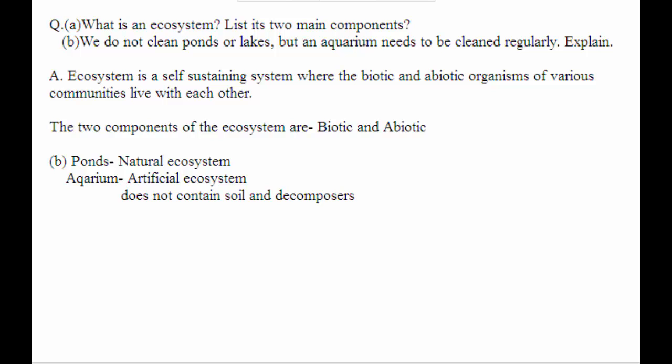So what is an ecosystem? Basically, an ecosystem is a self-sustaining system where the biotic and abiotic organisms of various communities live with each other. Here living things and non-living things interact with each other. The two components of the ecosystem are biotic and abiotic.